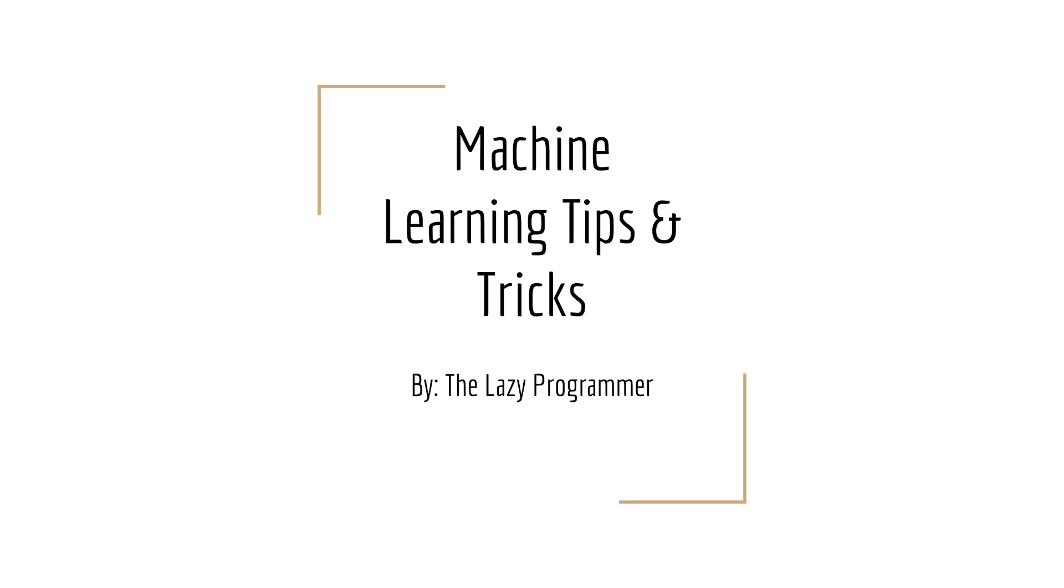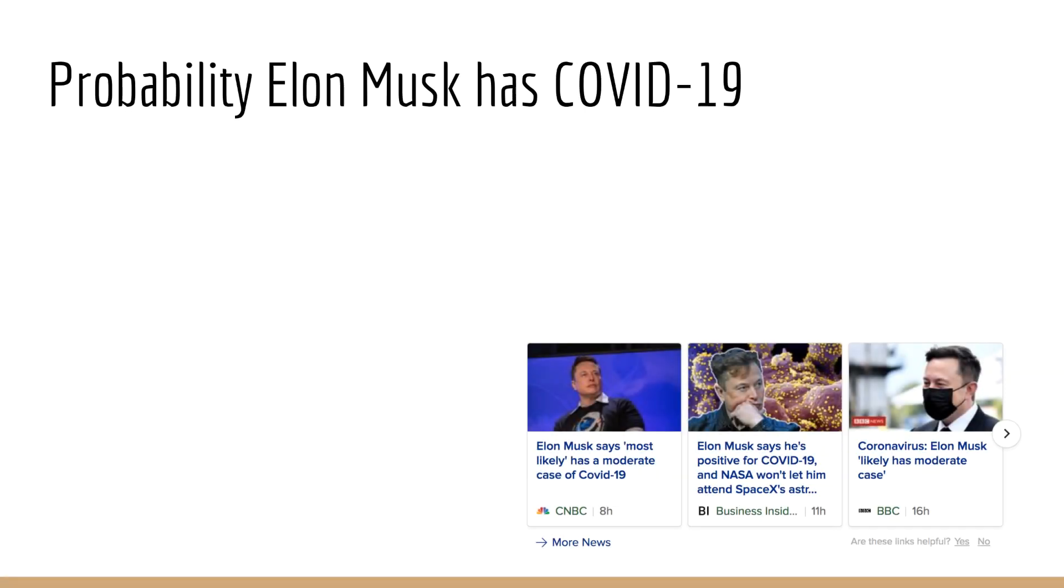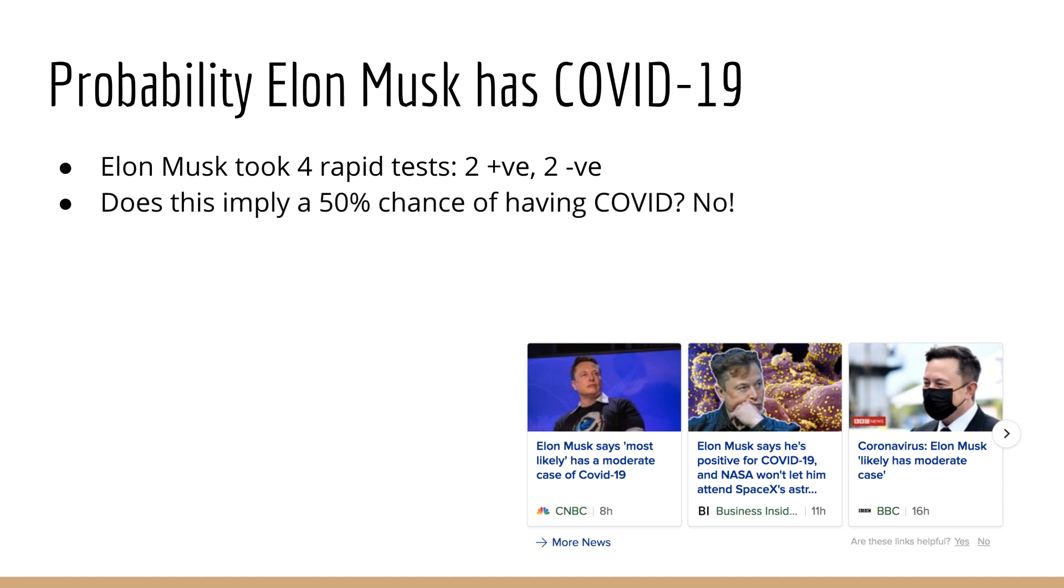Hey everyone and welcome to another episode of the Lazy Programmer Show. In this video, we are going to answer the question, what is the probability that Elon Musk has COVID-19? As you may have heard, Elon Musk recently took four rapid tests for COVID-19, two of which came back positive and two of which came back negative. Now, you may assume that this means he has a 50% chance of having the virus.